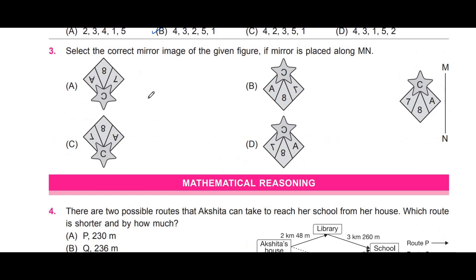The third question: select the mirror image of the given figure if the mirror is placed along MN. The original figure shows C, 7, 8, and A. When something is reflected in a mirror — like the word 'ambulance' written in reverse on emergency vehicles — it flips horizontally, not vertically. Looking at option A: C and A and 7 have been flipped vertically, not horizontally, so A is not the right answer.